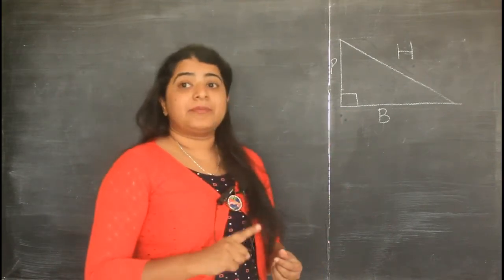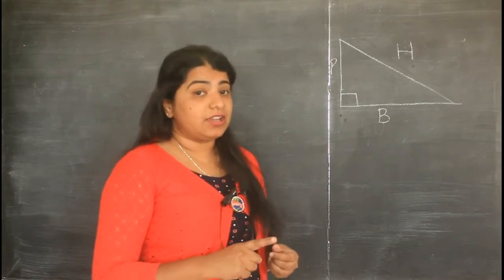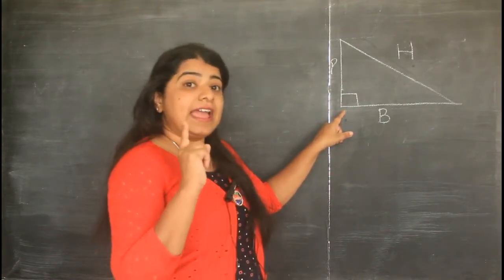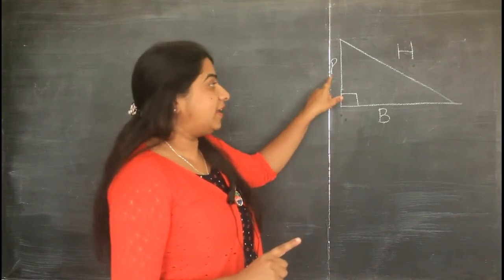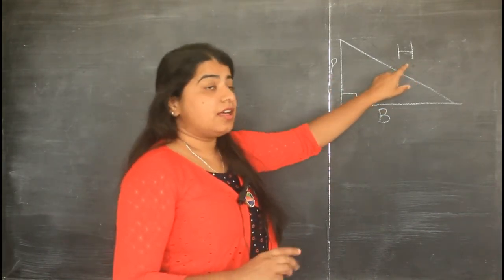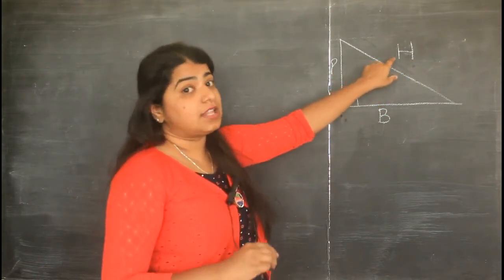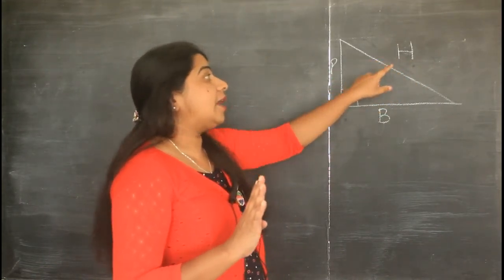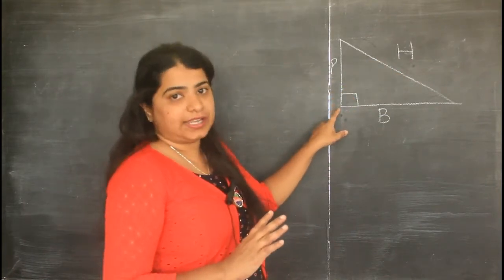To recap: firstly, Pythagoras theorem works only on a right angle triangle. Every right angle triangle has a perpendicular, a base, and a hypotenuse. Thirdly, the hypotenuse is the longest side. And fourthly, the hypotenuse is always opposite to your 90 degrees.